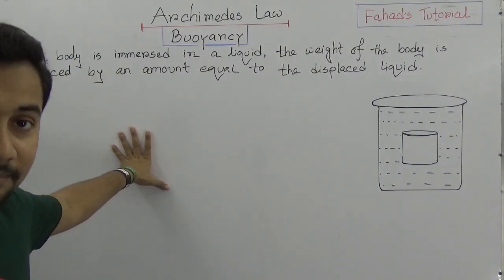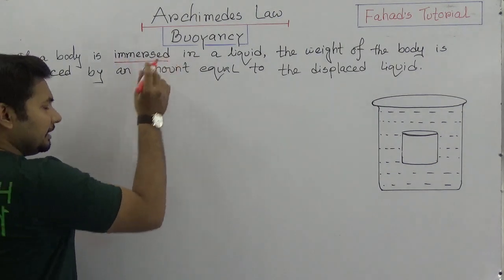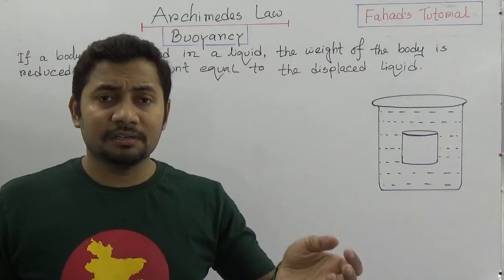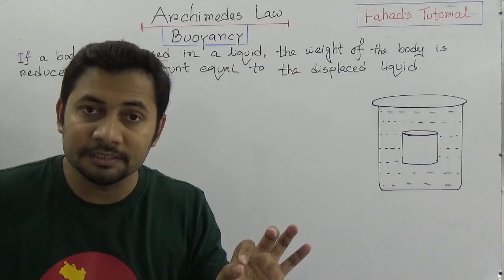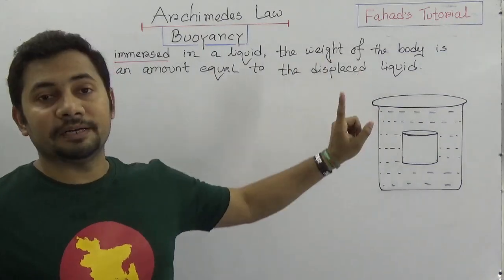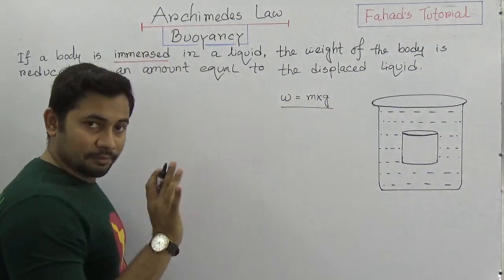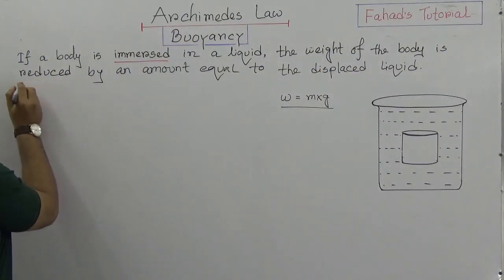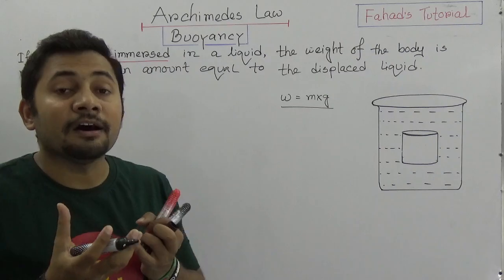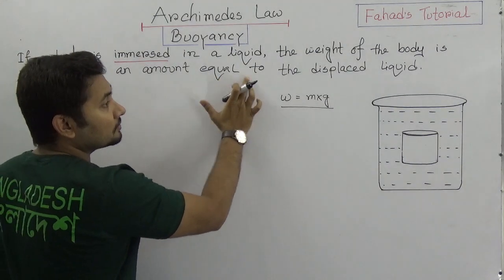So you see that the statement of Archimedes said that if a body is immersed — the first thing is immersed — if a body is immersed in a liquid, that liquid can be anything: water, corrosion, even mercury, whatever. In any liquid, if a body is immersed, the weight of the body — you already know that we measure weight by multiplying mass times gravity — this weight of the body is reduced. So it means that it is about feeling weightlessness when an object is immersed into the water or any liquid. It is reduced by an amount equal to the displaced liquid.